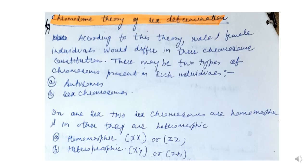As we discussed in the first lecture, the chromosome theory of sex determination states that male and female individuals differ in their chromosome constitution. There may be two types of chromosomes: autosomes and sex chromosomes. Sex chromosomes may be homomorphic, where both are of the same type such as XX in humans or ZZ in insects, or heteromorphic like XY in males or ZW in birds, butterflies, and moths.